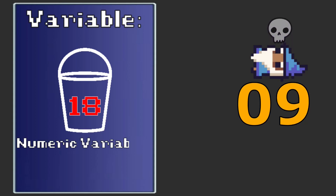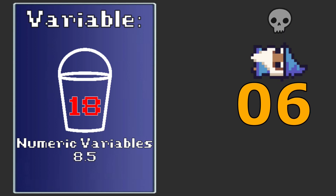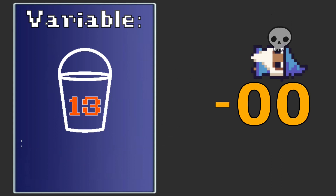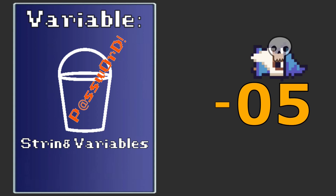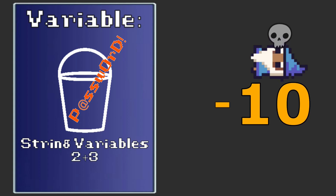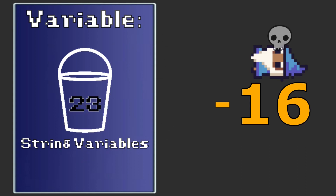First, we have numeric variables, capable of holding numbers, including those pesky decimals, which allows us to perform math equations such as addition or multiplication. String variables, which consist of one or many characters, such as what you would use in a password, can hold letters, special characters, and yes, even numbers again. But here's the twist: when you add two string numbers together, the math doesn't quite follow the same path that numerical values would — such as 2 plus 3 equals 23.